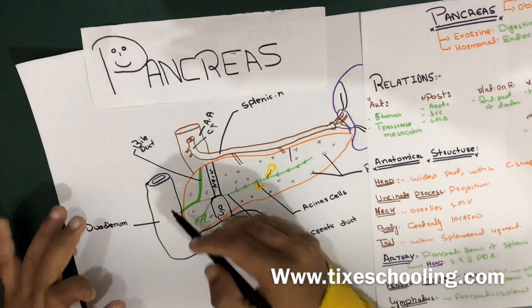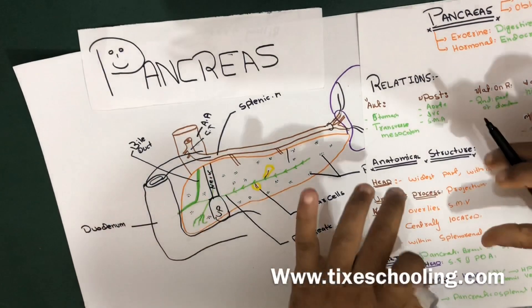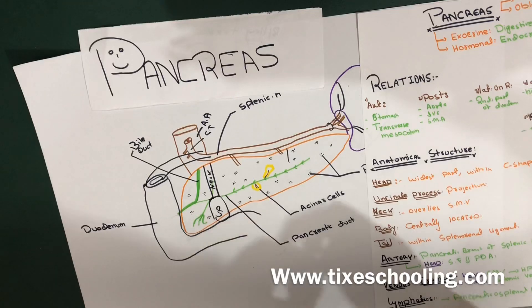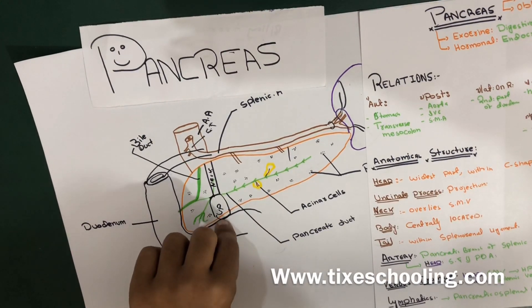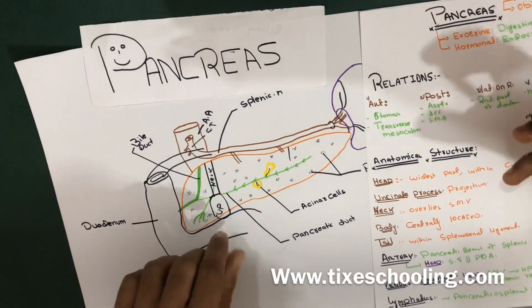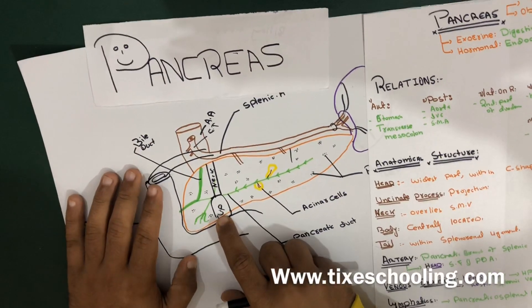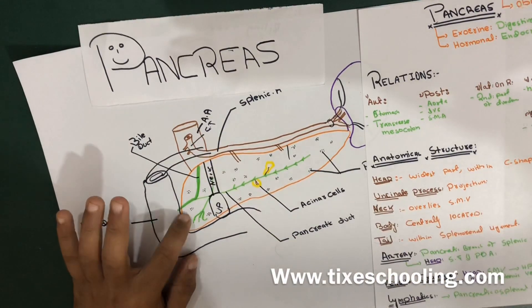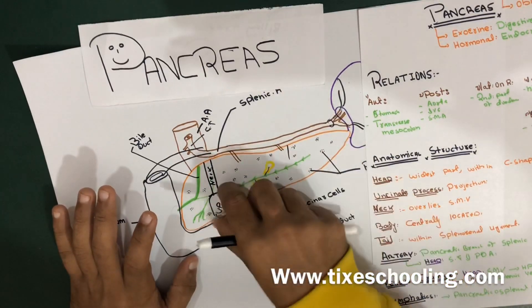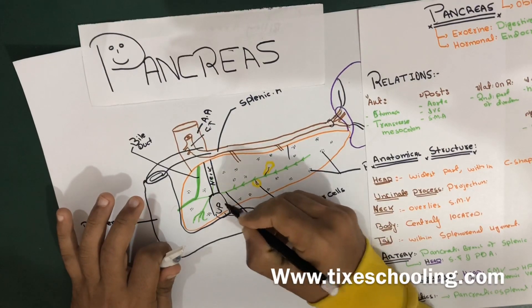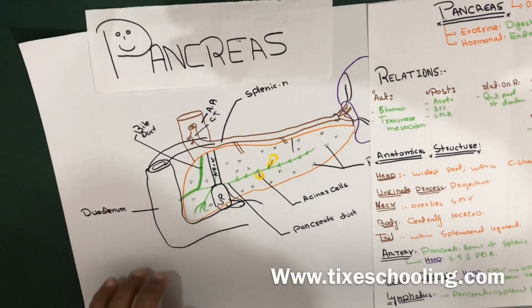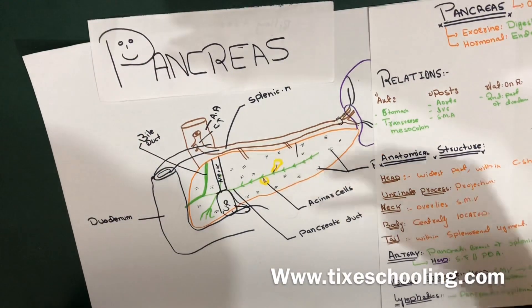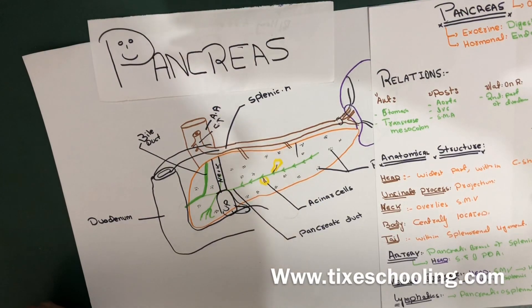The head of the pancreas lies within the C-shaped curve created by the duodenum and is connected by connective tissue. The uncinate process is a projection arising from the lower part of the head, extending medially to lie beneath the body of the pancreas. The uncinate process lies posterior to the superior mesenteric vessels.